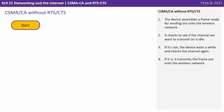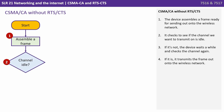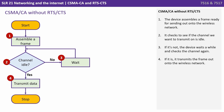Let's start by looking at CSMA/CA without RTS/CTS. We start with the device assembling a frame ready for sending out onto the wireless network. It then checks to see if the channel we want to transmit on is idle. If it's not, the device waits a while and checks the channel again. If it is idle, it transmits the frame out onto the wireless network.